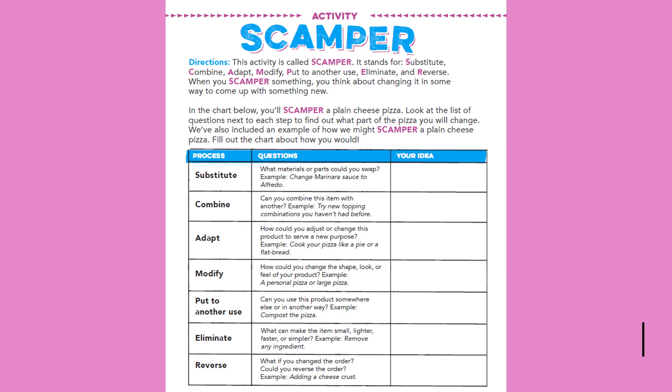You fill out the chart on how you would do it. For Substitute — what materials or parts could you swap? Their example: change marinara sauce to Alfredo. What would you swap? For Combine — can you combine this item with another? Their example: try new topping combinations you haven't had before. For Adapt — how could you adjust or change this product to serve a new purpose? Their idea: cook your pizza like a pie or flatbread. Write down what your idea would be.